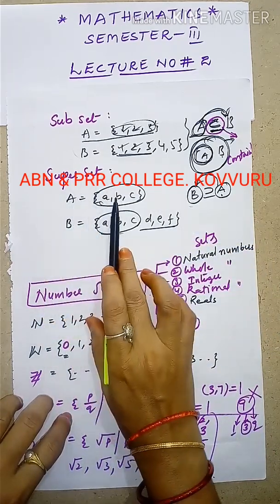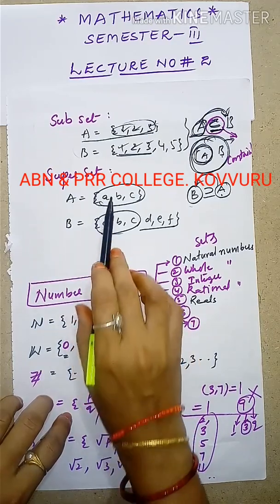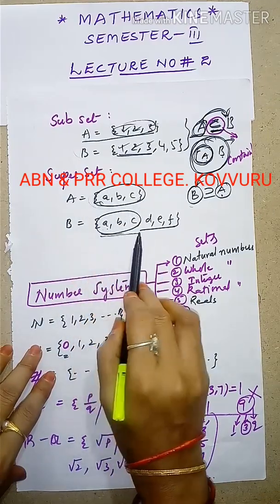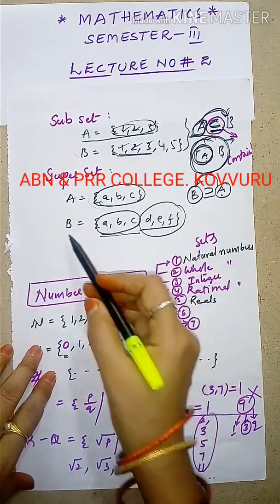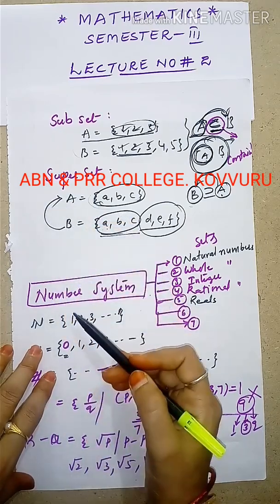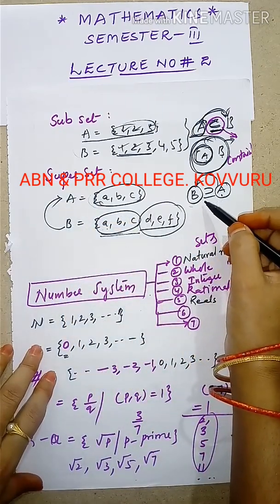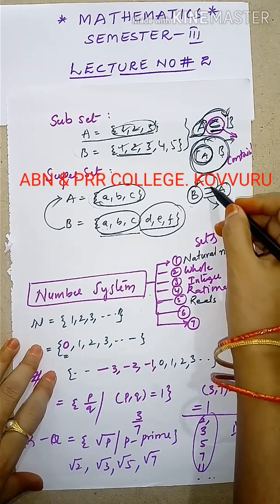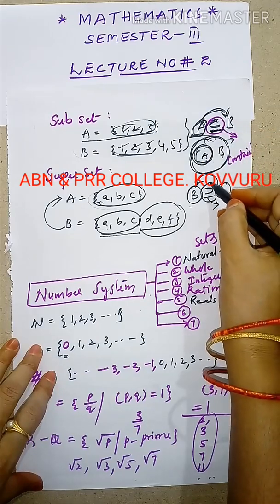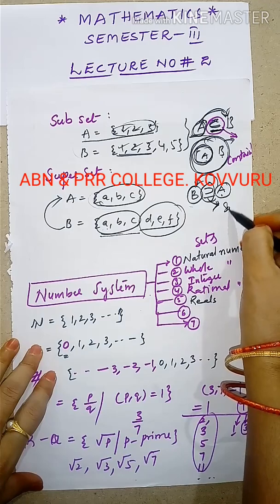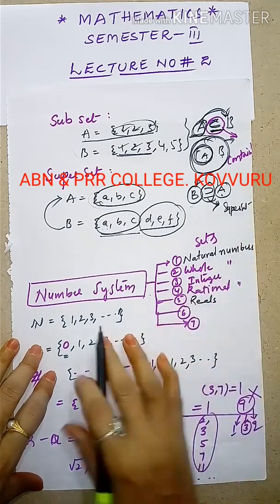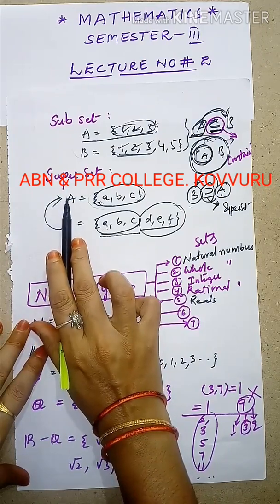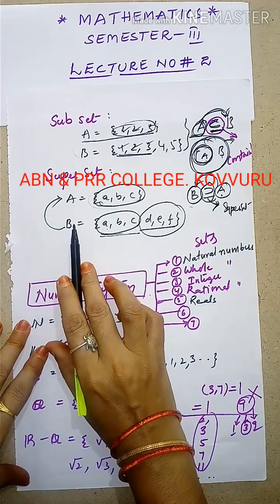Suppose you consider sets A and B where B has many more elements than A. Then B is called the superset of A. If B consists of more elements and A entirely lies in B, then we say that B is the superset of A.